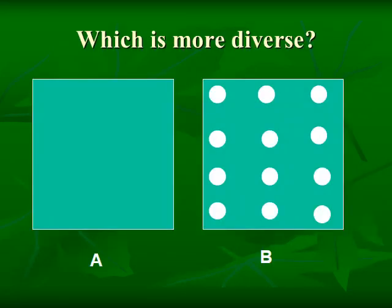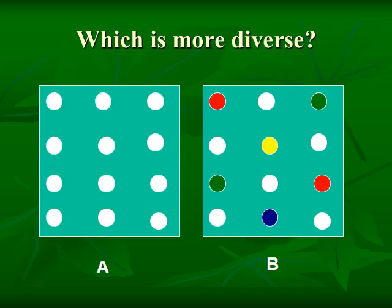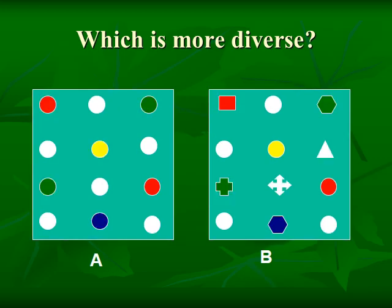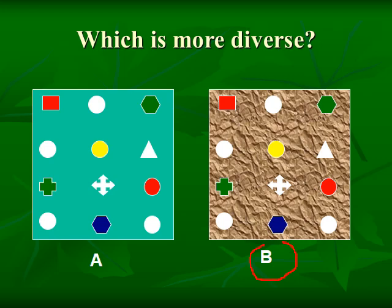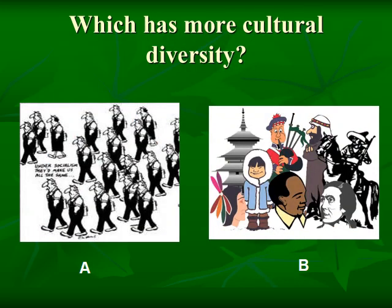With our discussion of diversity, which do you think is more diverse — A or B? It's B. B is more diverse in each comparison. Like what we have in the picture, some images show things that are all exactly the same — that does not represent biodiversity. But the second picture shows diversity, not only in physical appearance, but also cultural diversity.